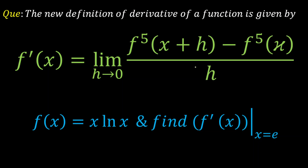Hello everyone. Today we are going to look at a nice problem from method of differentiation, that stands for MOD. The problem involves a new definition of a derivative of a given function: f'(x) is given by the limit as h tends to 0 of [f(x+h)]^5 minus [f(x)]^5, all divided by h.